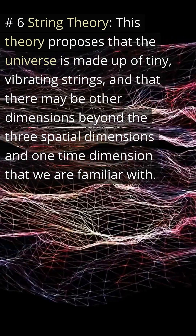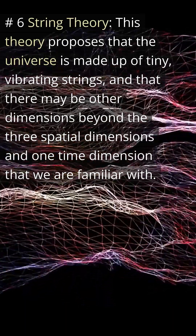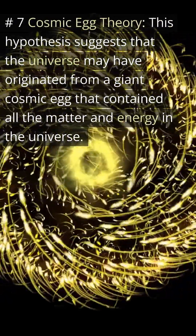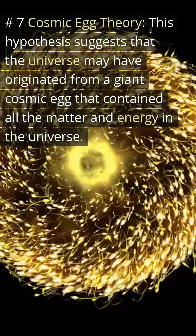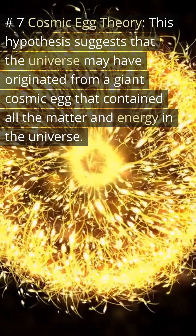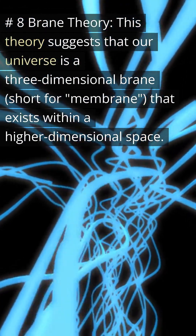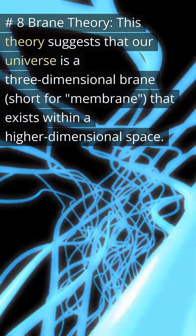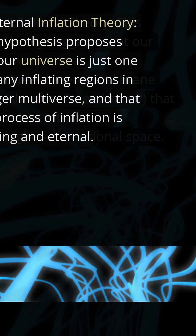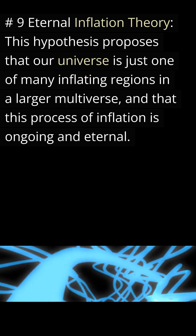String theory further proposes that there may be other dimensions beyond the three spatial dimensions and one time dimension that we are familiar with. Number seven: cosmic egg theory — this hypothesis suggests that the universe may have originated from a giant cosmic egg that contained all the matter and energy in the universe. Number eight: brane theory — this theory suggests that our universe is a three-dimensional brane, short for membrane, that exists within a higher dimensional space.